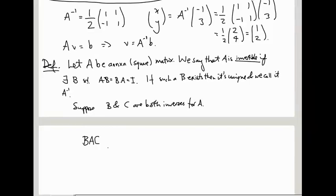Well then, if you look at the expression BAC, we can evaluate this in two ways. On the one hand, we can group together the B and the A, and because B is an inverse for A, that gives us the identity, so this is equal to C. And on the other hand, we can group together the A and the C, and because C is an inverse for A, this cancels and gives us the identity, so we get B. So B equals C overall.